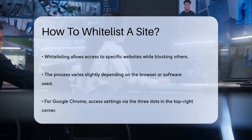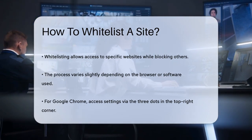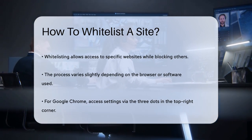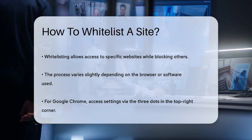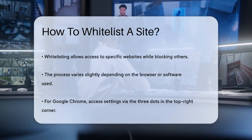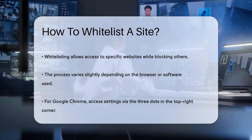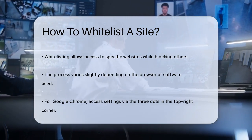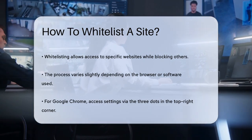First, let's start with Google Chrome, one of the most popular browsers out there. To whitelist a site in Chrome, you need to open the browser and click on the three dots in the top right corner. Select Settings and scroll down to the Privacy and Security section. Here, click on Site Settings, then Content. Scroll down to the Allowed section and click on Add to enter the URL of the website you want to whitelist.